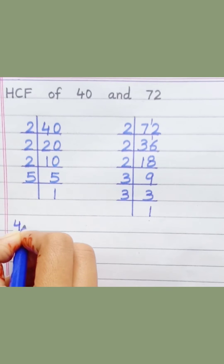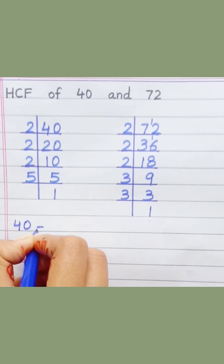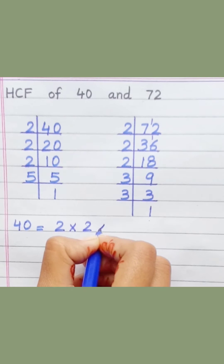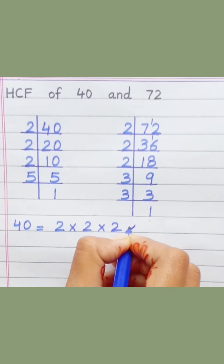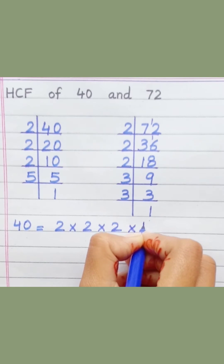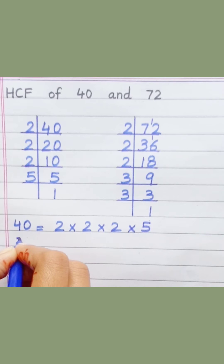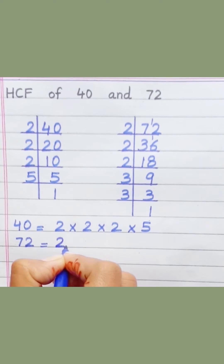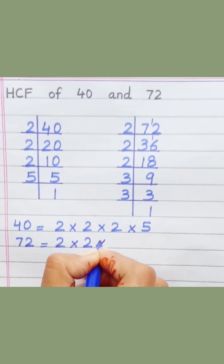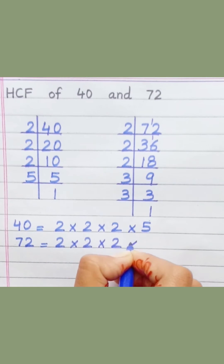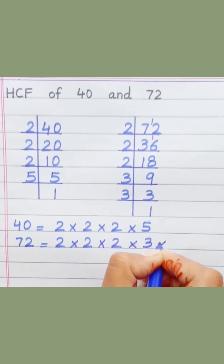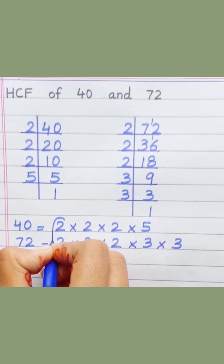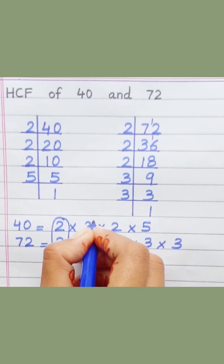40 equals 2 x 2 x 2 x 5. 72 equals 2 x 2 x 2 x 3 x 3. Loop the common prime factors among both.